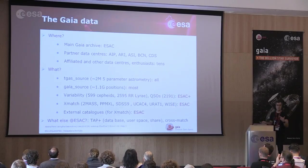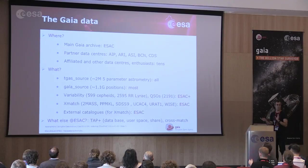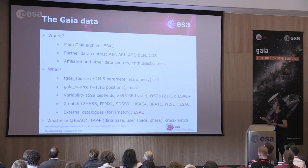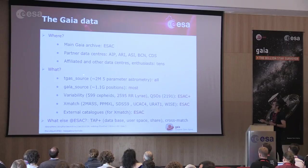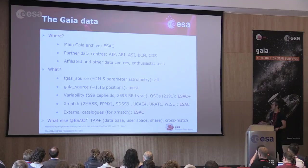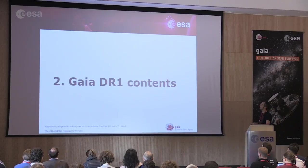Where is the Gaia data? At ESAC we have a copy, but there are more — different partner data centers, from TAP to supercomputing formats. There are also many other copies by affiliated data centers, enthusiasts, CSV files circulating via Twitter, and so on. We have an astrometry and photometry table — TGAS and Gaia source — variability catalogs, external catalogs, and the added value we provide at ESAC is what we call TAP+: a database where you can upload your results, data, or catalogs to your user space, and it can be shared and cross-matched.